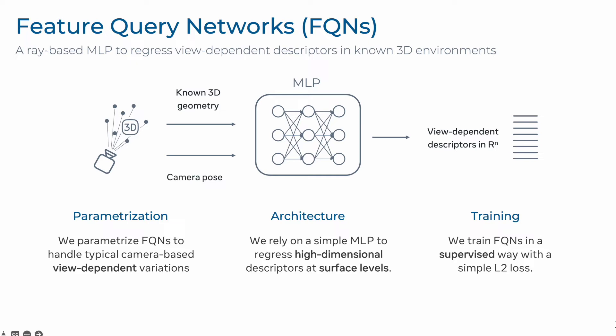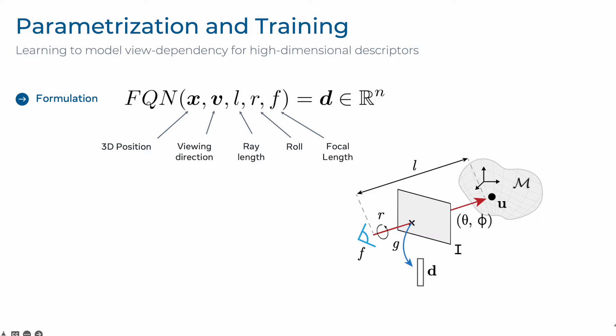We parametrize the FQN as follows. Given a scene with known geometry and a camera pose, we first feed 3D coordinates of points in the scene along with their viewing directions. To model changes in object scale, we also parametrize the FQN on the ray length, and to account for planar transformations, we also add camera roll and focal length. We provide in our paper an ablation study that shows the benefit of having each of these parameters. Note that unlike approaches like NeRF, we do not learn to model the scene density, but face the challenge of regressing high-dimensional descriptors.